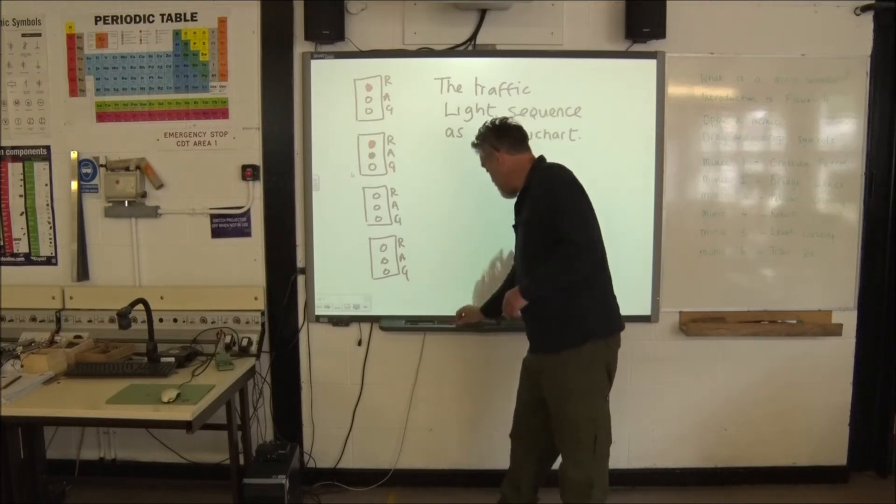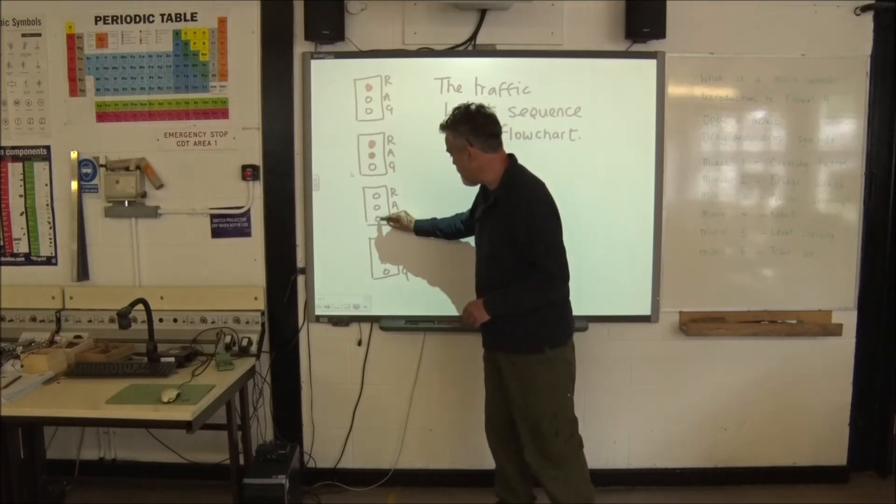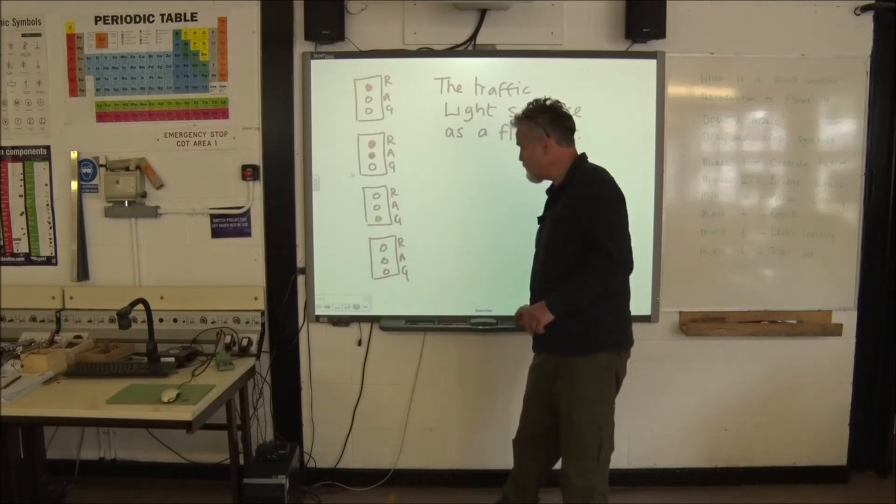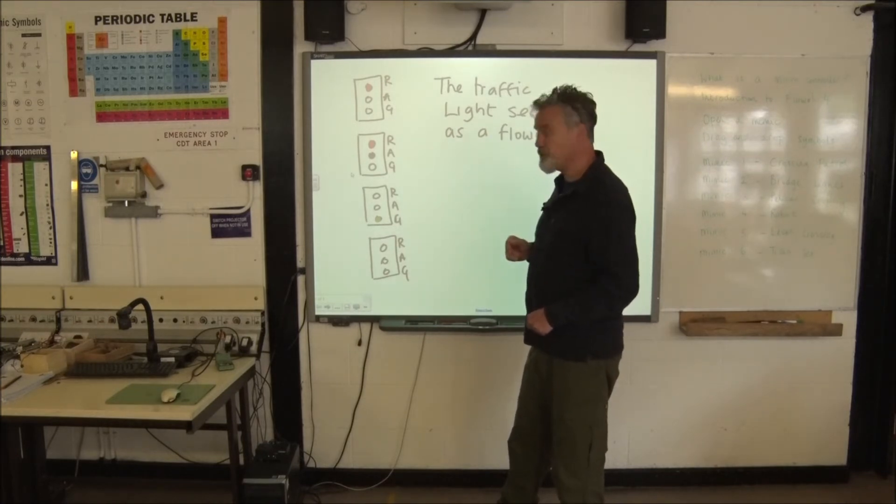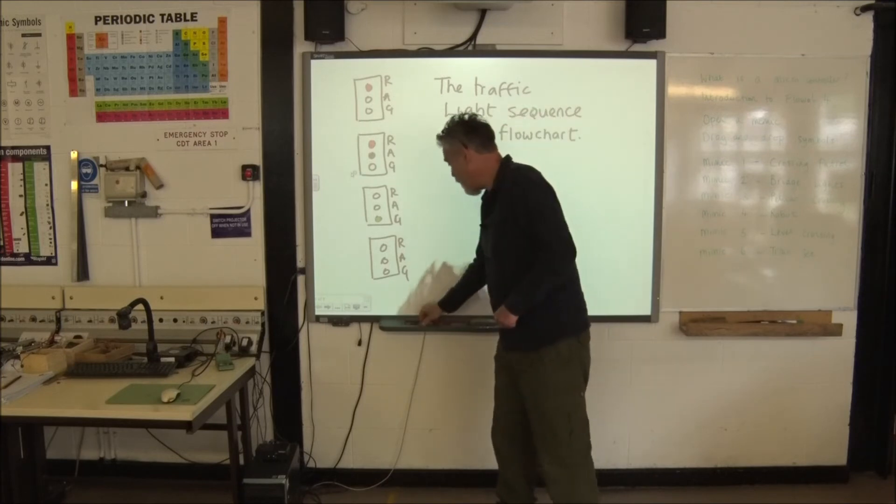The next sequence Mrs. Poo is correct, green followed by green. Okay, now green will stay on and allow traffic to flow and after a period of time the next light will be amber. Amber only.